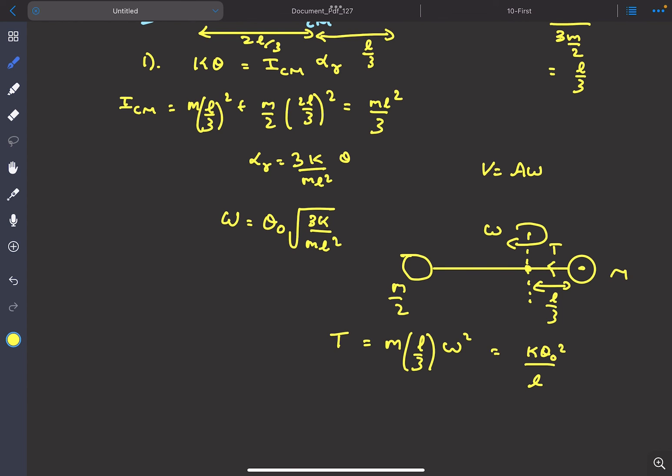So that was it for this problem. It was a great problem. In the JEE Advanced 2023 question, what they asked was the ω of this revolution. So in that case, the answer would have been √(3k/mL²). If you enjoyed the video, please like and subscribe. Thanks for watching!